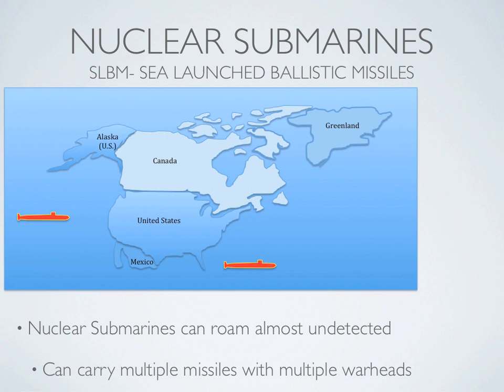Nuclear submarines use nuclear power and can stay submerged for months at a time. These submarines carry SLBMs, or sea-launched ballistic missiles. The advantage to these missiles is that they are almost impossible to find, and they can get very close to the target, which gives little or no warning time.